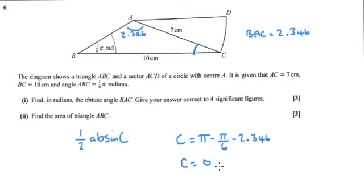So that gives us 0.272 radians. And so the area is going to be a half of 10 times 7 times sine of that angle there.